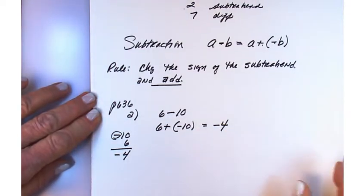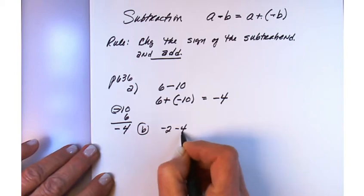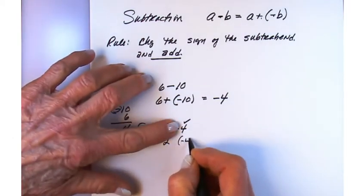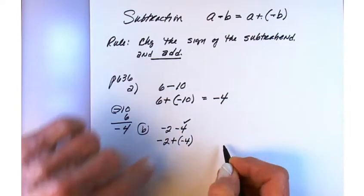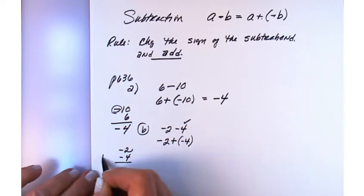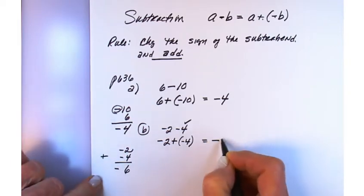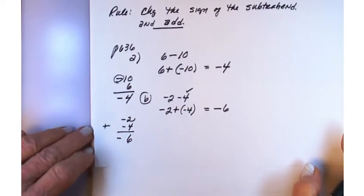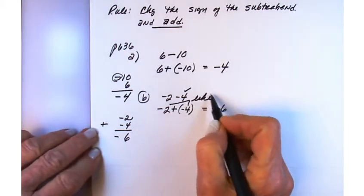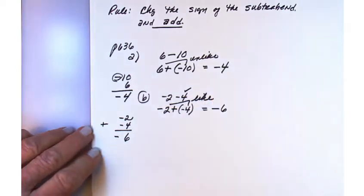Example b: minus 2 minus 4. The subtrahend is positive 4 — change it to negative 4, change the operation to add. Now we have minus 2 plus negative 4. Find the absolute sum, which is 6. Our signs are like signs now, so we use the given sign — both negative — giving us negative 6.